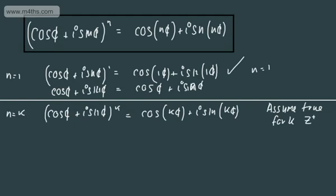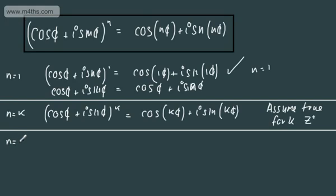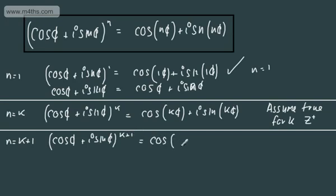If true for n equals k, it will be true for the next positive integer, n equals k plus 1. So we're assuming true for n equals k, therefore it will be true for the next integer, n equals k plus 1. So we want to show that cos θ plus i sin θ to the power of k plus 1 equals cos((k+1)θ) plus i sin((k+1)θ).